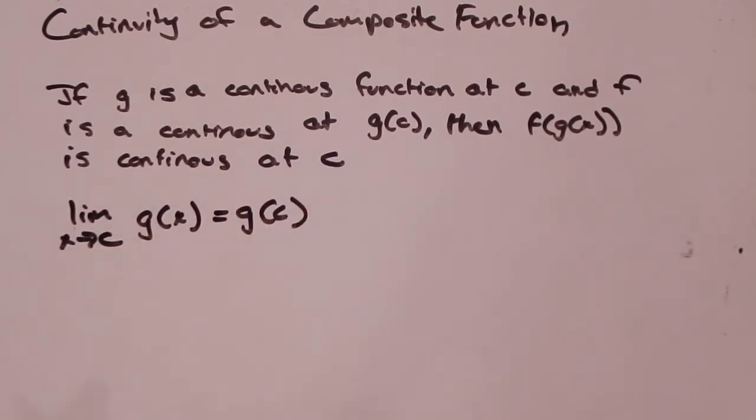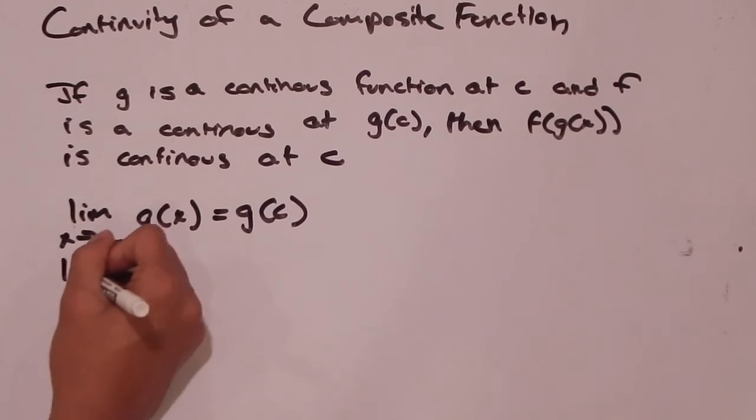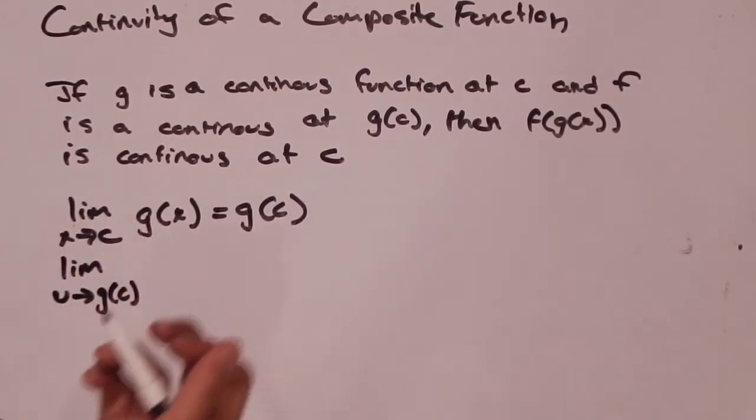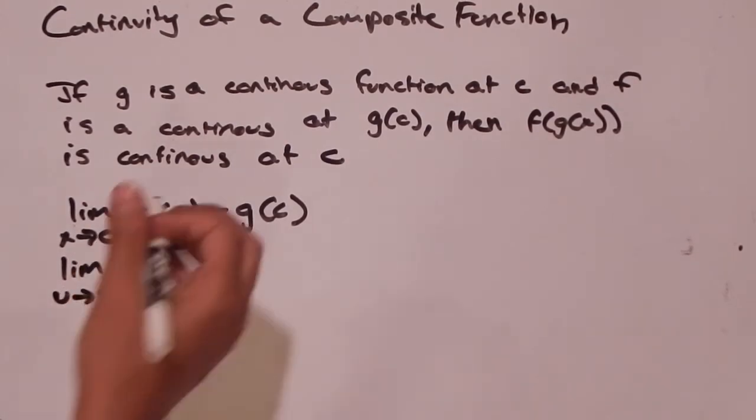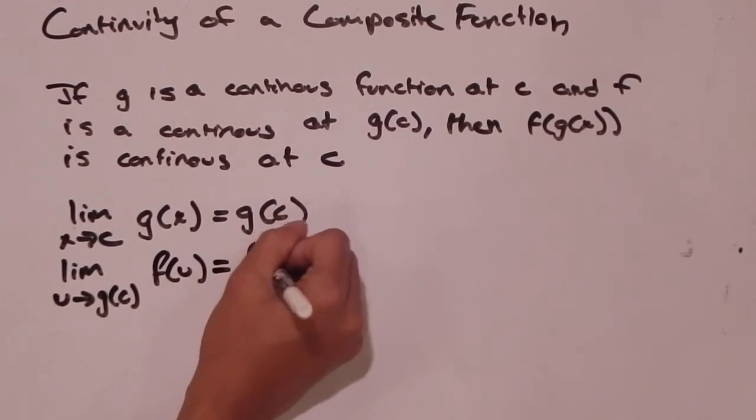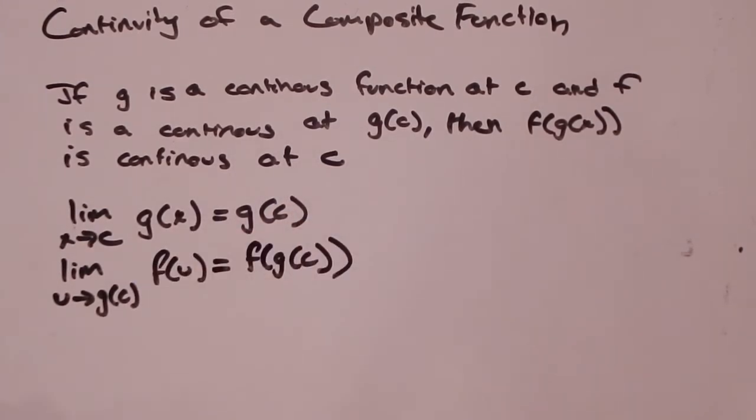And we know that f is a continuous function at g(c), so the limit as u approaches g(c) - u is just our input for f - of f(u) is going to equal f(g(c)). We know that because f is continuous at g(c).